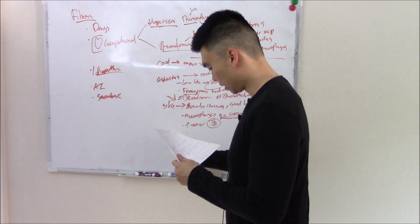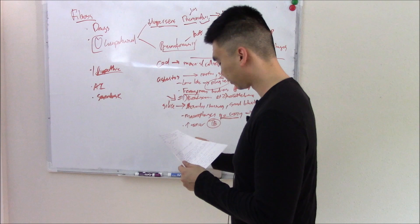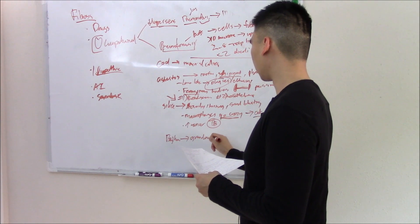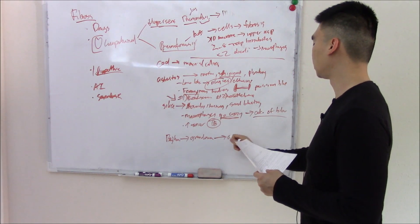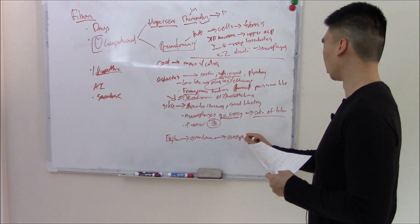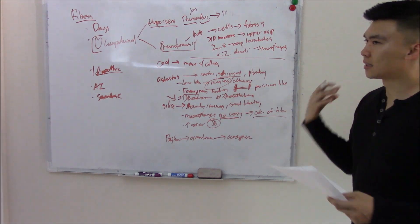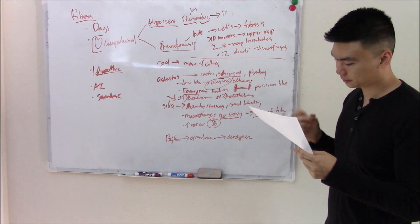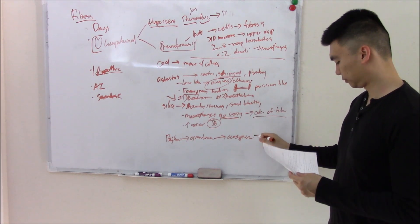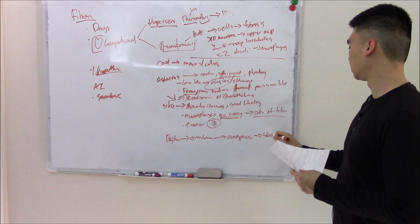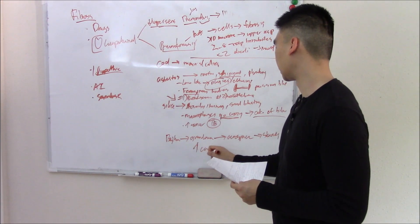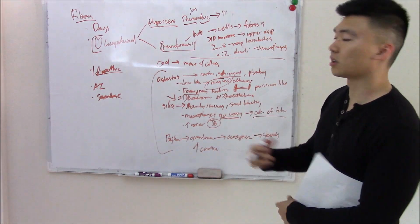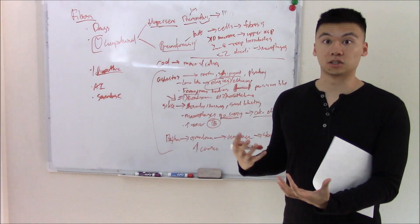Last one is beryllium. Beryllium causes these granulomas that look a lot like sarcoidosis, which we'll talk about in a second. But these people work in aerospace. That's how you get beryllium exposure in the first place. So if they say an aerospace worker in the history, they're literally giving it away. You can treat it with steroids. And these come with an increased risk of cancer. So these three have an increased risk of cancer, with silica being the only one that has an increased risk of TB because its macrophages are going crazy.